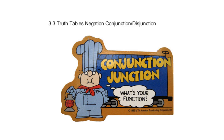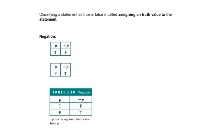Section 3.3 is about truth tables. We're working with negation, conjunction, and disjunction. Classifying a statement as true or false is called assigning a truth value to the statement.